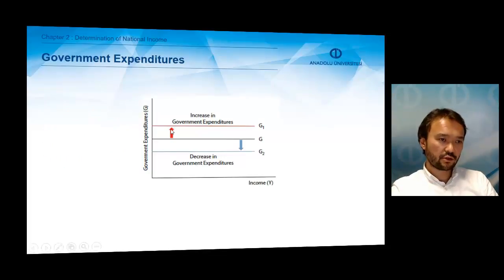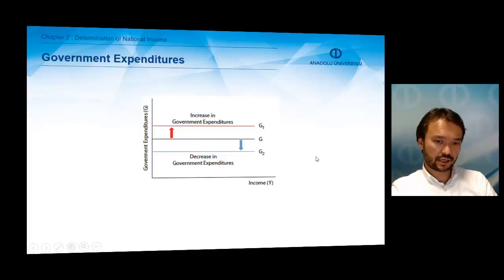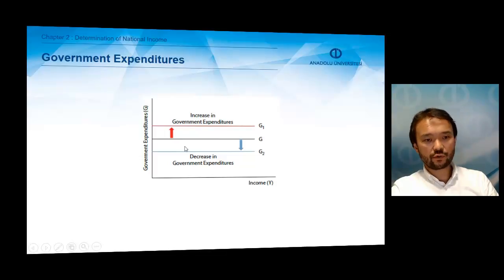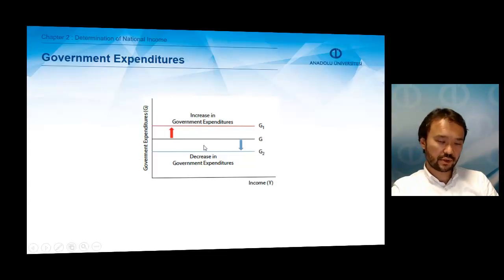Another part of the aggregate expenditure function is government expenditures. When there is an increase in government expenditures, the curve shifts upward; when there is a decrease in government expenditures, the curve shifts downward.